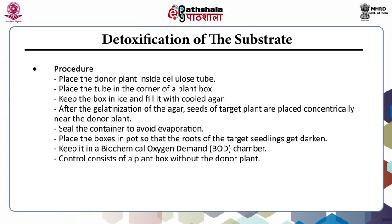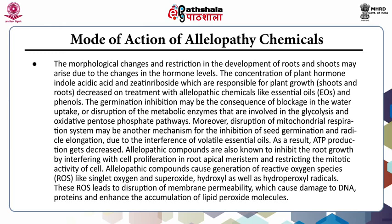In the plant box method procedure: the donor plant is placed inside a cellulose tube, which is kept in the corner of a plant box filled with cooled agar. After gelatinization of the agar, seeds of the target plant are placed concentrically near the donor plant. The container is sealed to avoid evaporation. The boxes are placed in a pot so that roots of target seedlings are darkened, and kept in a biological oxygen demand chamber. The control consists of a plant box without the donor plant.